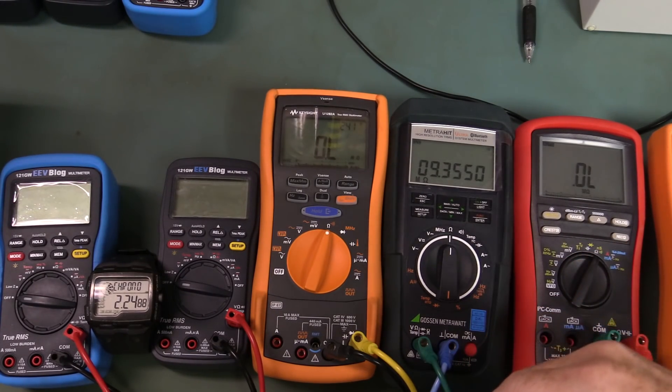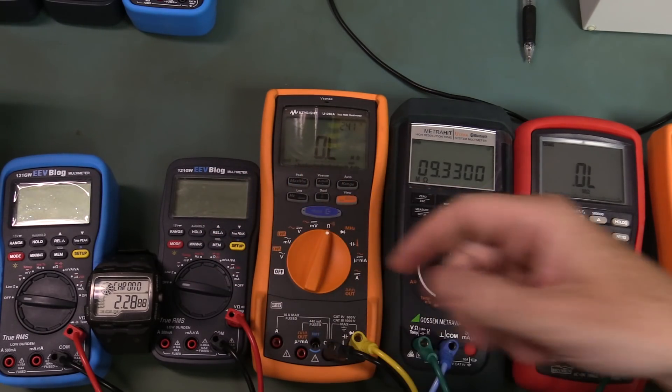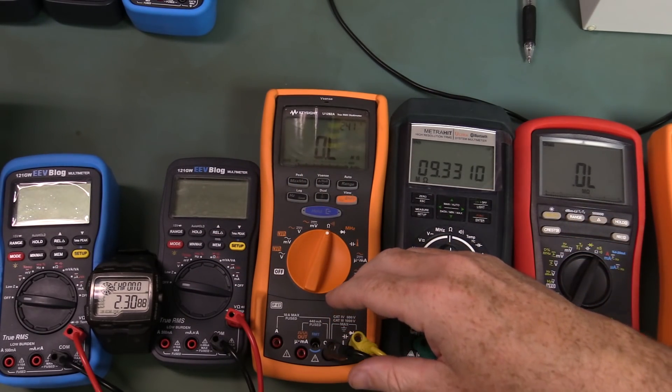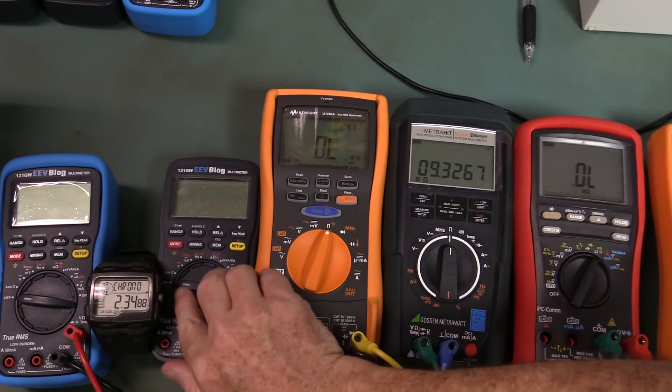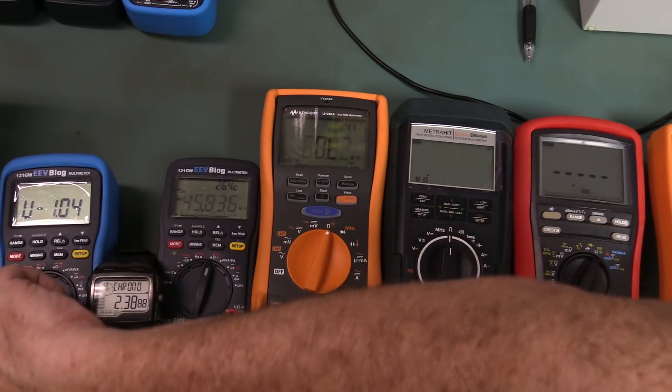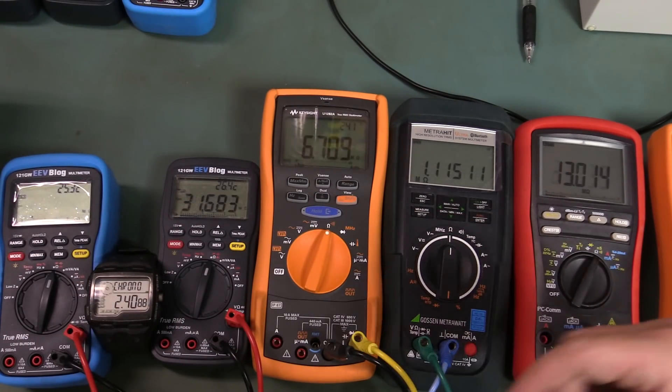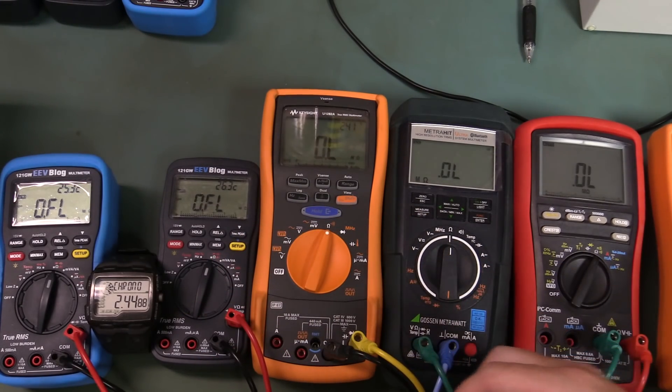Hi, just a quick update video on the continuity range, sorry, the ohms range auto-ranging speed of the 121GW firmware. I've got some new firmware here, it's 1.05. I'll compare that to 1.04, which is a previous update I had which improved the speed, but 1.05 improves it again.